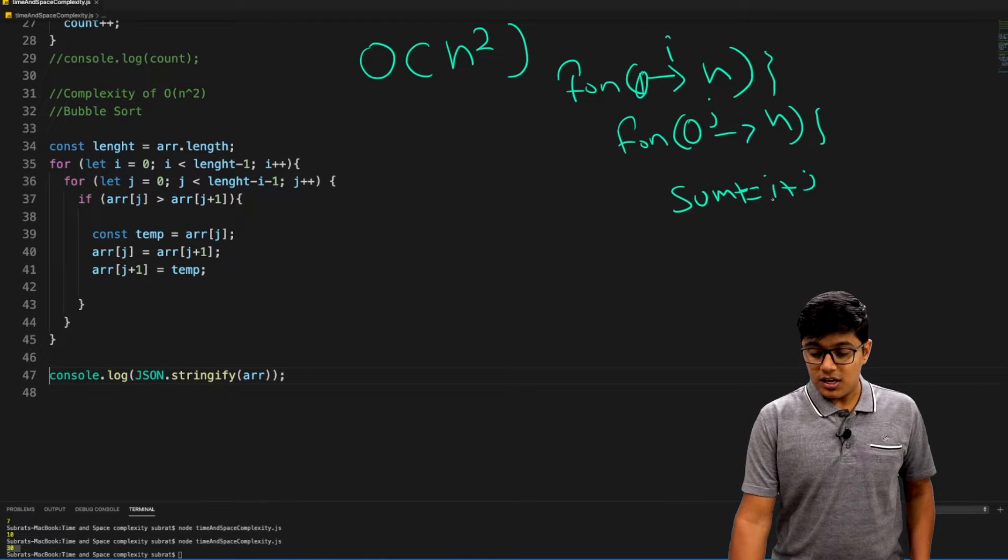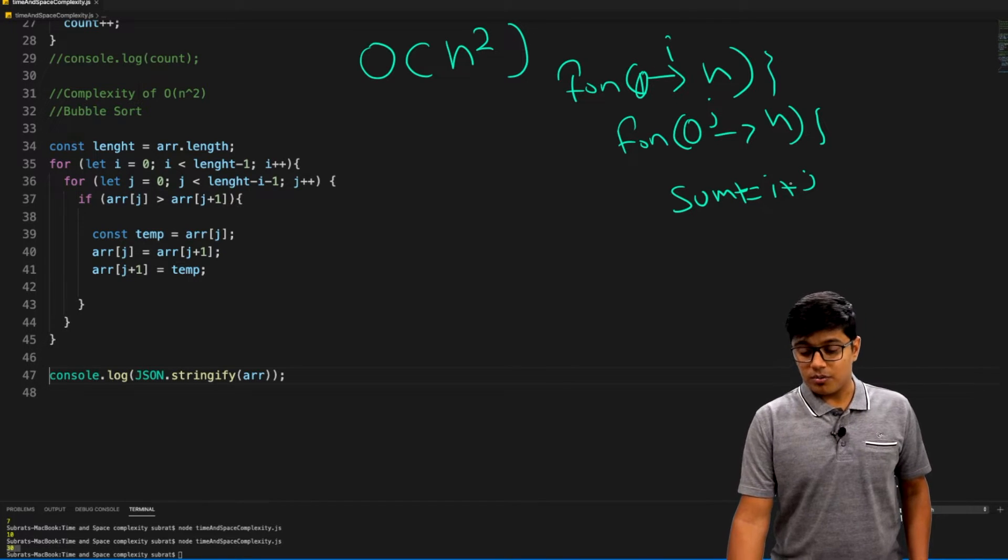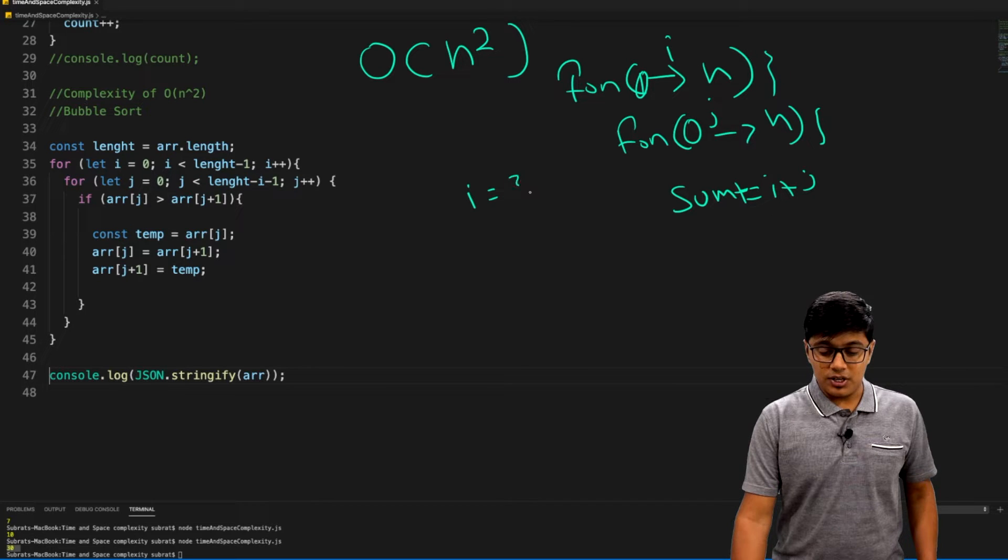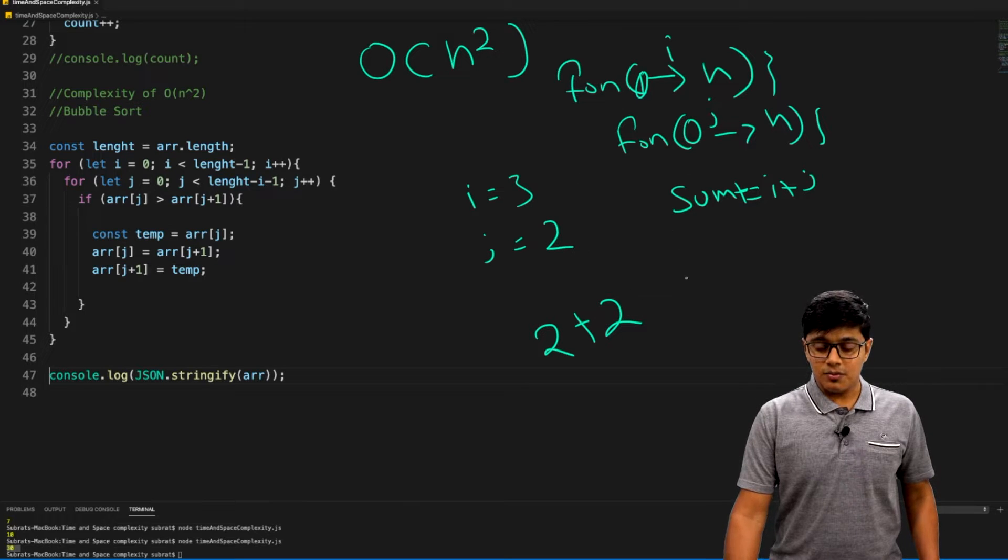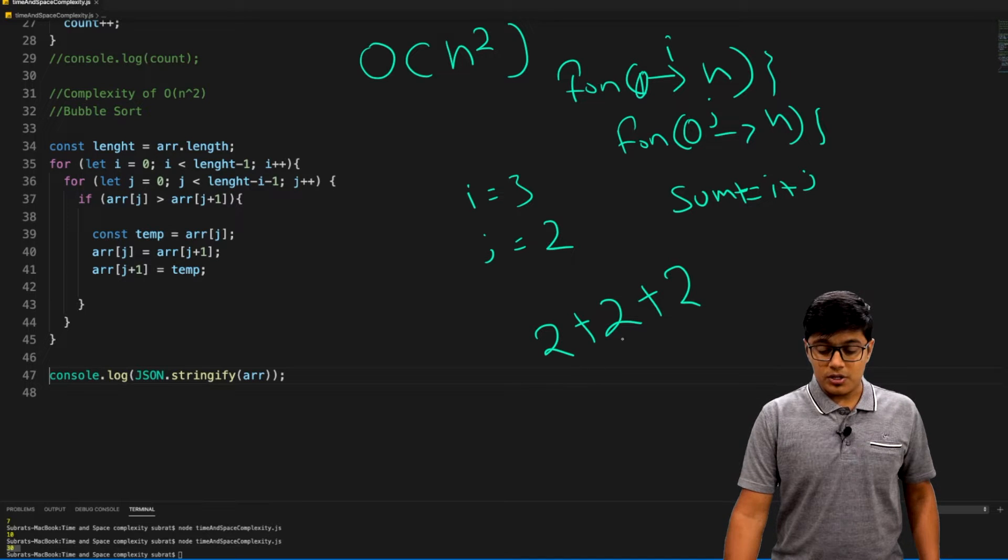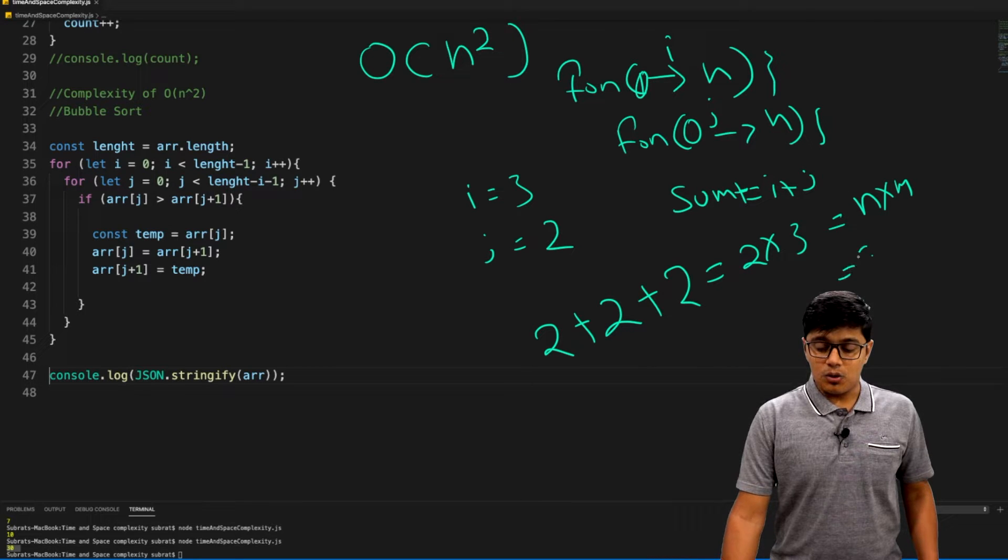Suppose i equals 3 and j equals 2. This thing will run two times, plus second time it will run two times, plus third time it will run two times. What it will do is 2 plus 2 plus 2, so that is equal to 2 into 3. It's n into m, you can say n into m as big O of nm if it's different.